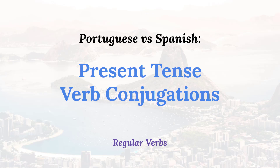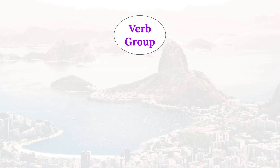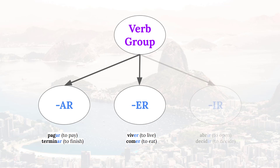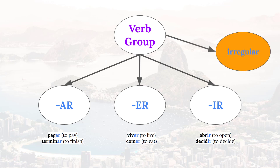In this video we'll be covering the present tense verb conjugations in Brazilian Portuguese for regular verbs. Just like Spanish, almost all verbs in Portuguese end in AR, ER, or IR. Most verbs follow the regular conjugation patterns we'll be covering in this video, but there is a smaller group of irregular verbs which have their own unique conjugations.